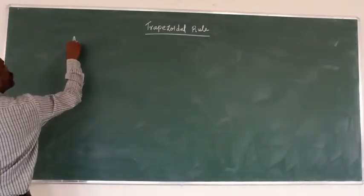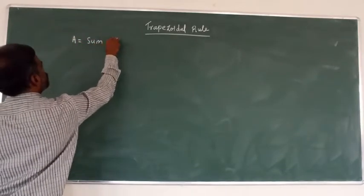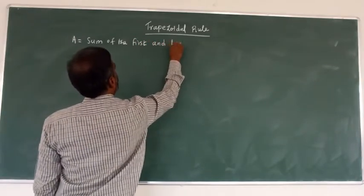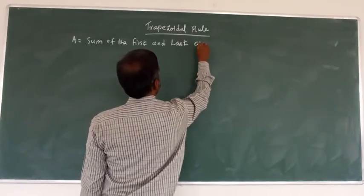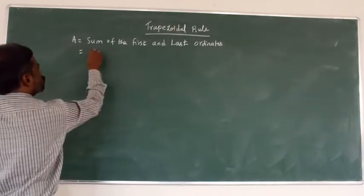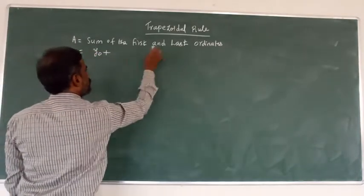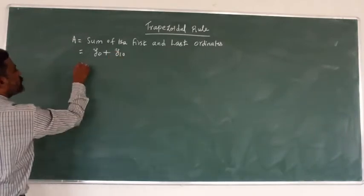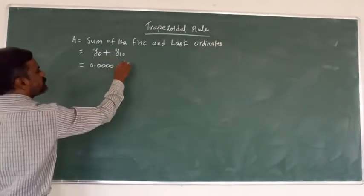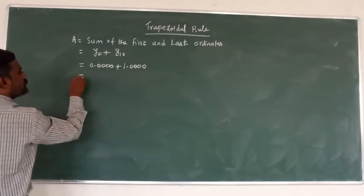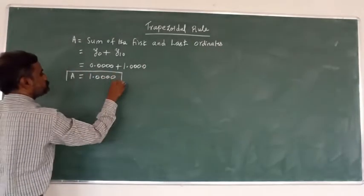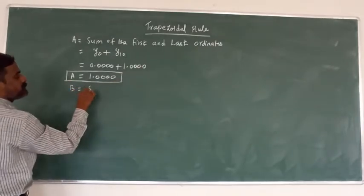Now we calculate the 'a' value: a = sum of the first and last ordinates = y₀ + y₁₀ = 0.0000 + 1.0000 = 1.0000. Then we calculate 'b' = sum of the remaining ordinates: y₁ through y₉.